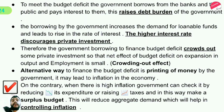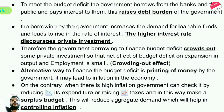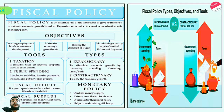On the contrary, when there is high inflation, the government can check it by reducing expenditure or raising taxes to create a surplus budget. So a surplus budget is used to counter inflation and a deficit budget is used to counter recession. A surplus budget reduces aggregate demand, which helps in controlling inflation.